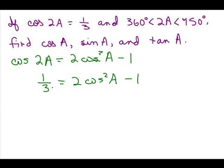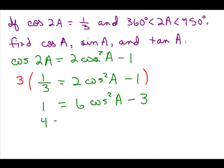There are different ways to solve it. I'm going to multiply both sides by 3 — the least common multiple — to get rid of the fractions. So 3 times 1/3 is 1, and 3 times 2 cosine squared a is 6 cosine squared a, and 3 times 1 is 3. Then we add 3 to both sides, giving us 4 equals 6 cosine squared a.